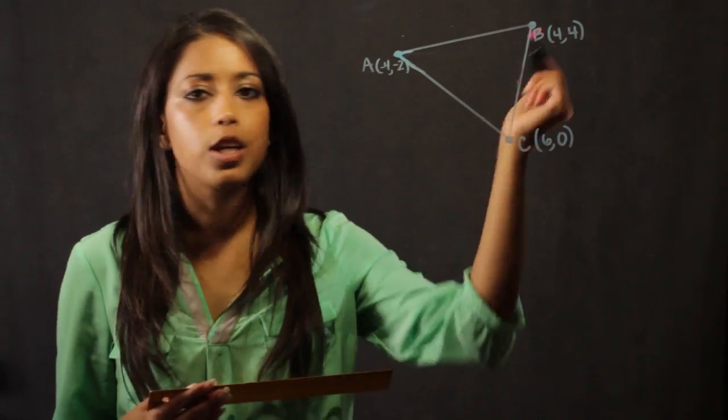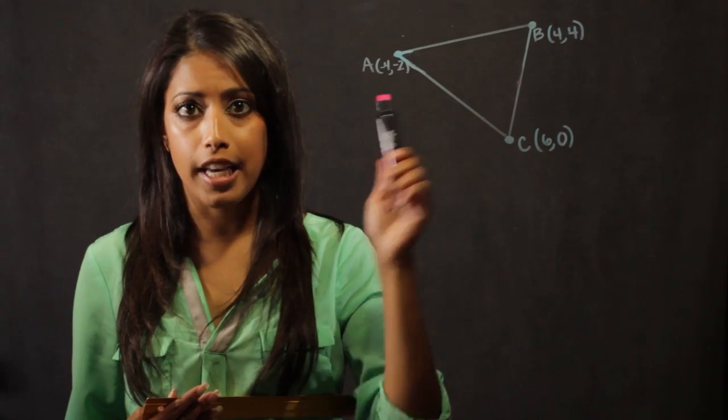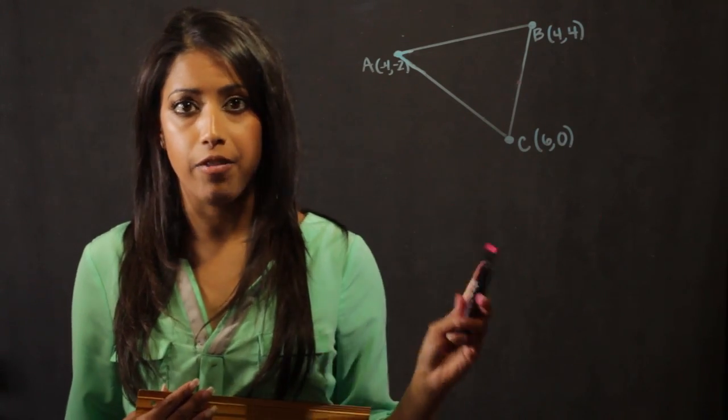To get an altitude, basically what I do is I start at a vertex and I go to its opposite side, creating a right angle.